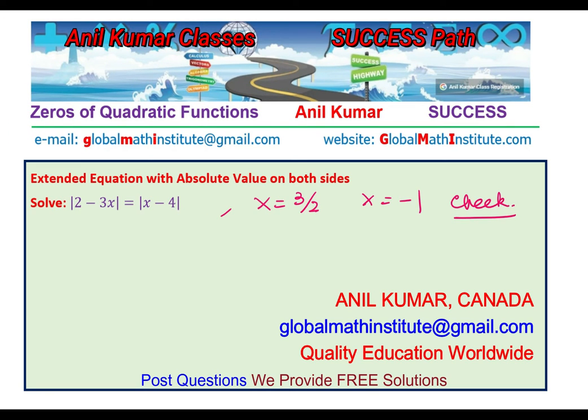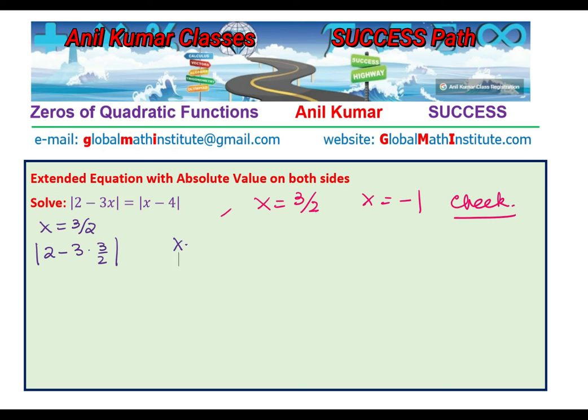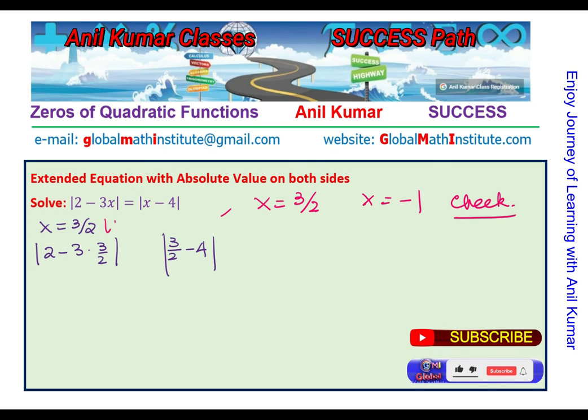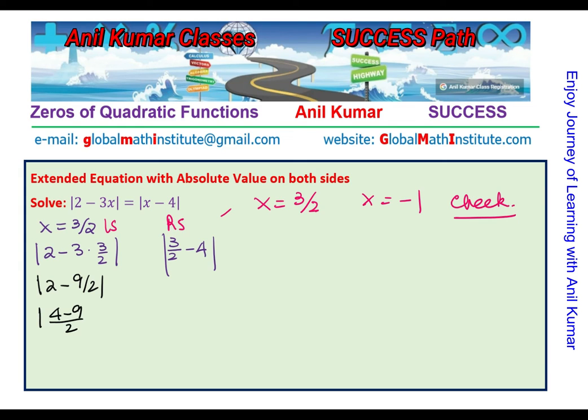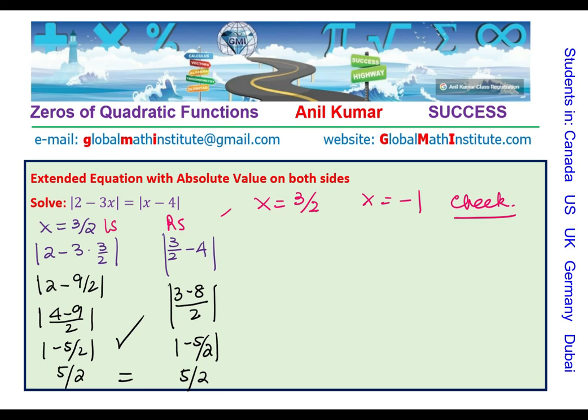Let's check this solution. We're going to first check the value x = 3/2. If I substitute on the left hand side we get |2 - 3(3/2)|. On the right hand side we have |3/2 - 4|. We get |2 - 9/2| which equals |4 - 9|/2 = |-5/2| = 5/2. On the right hand side we have |3 - 8|/2 = |-5/2| = 5/2, and both are equal. That means this value works.